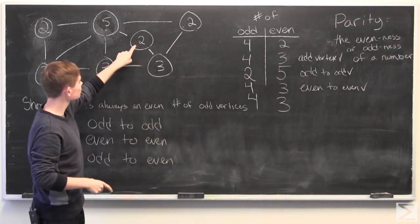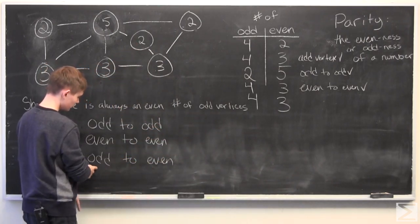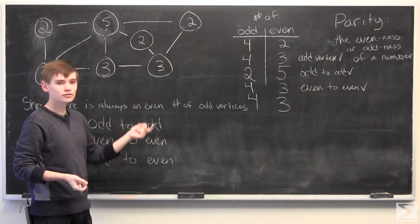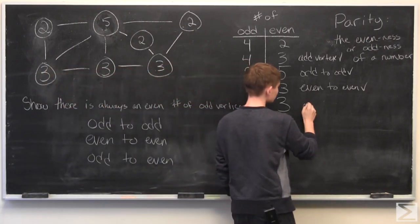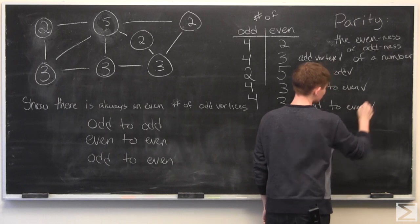And since we connected an odd to an even, we flip their parity. So this one will become even, this one will become odd. You don't change the number of even or odd vertices. So parity is conserved, so odd to even is good.